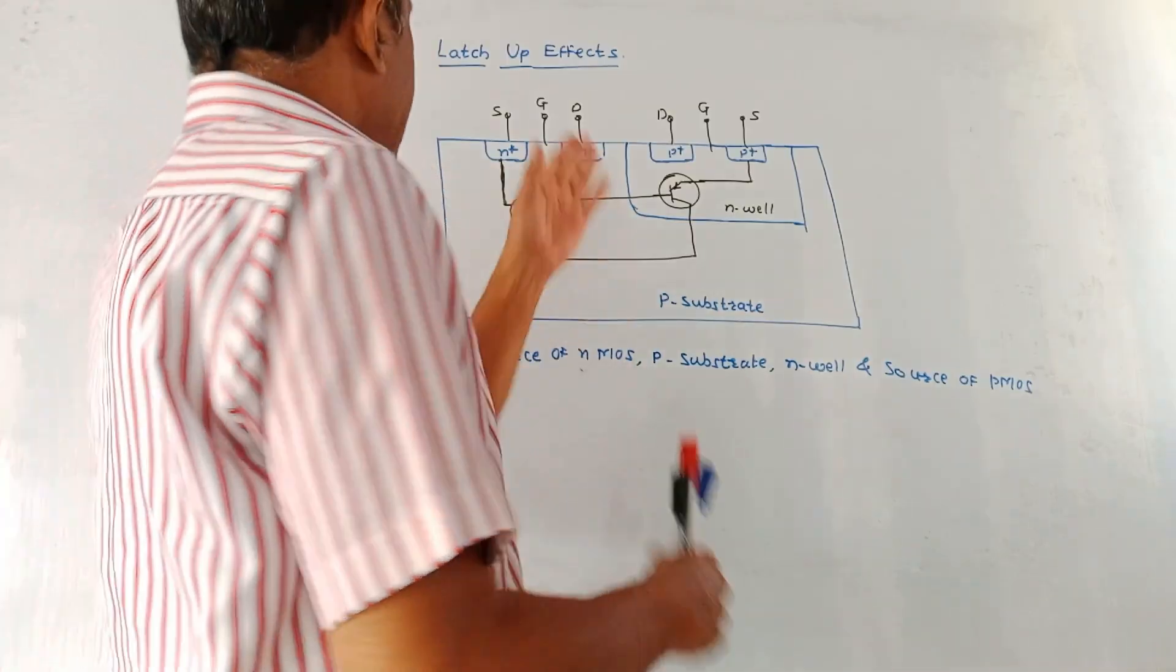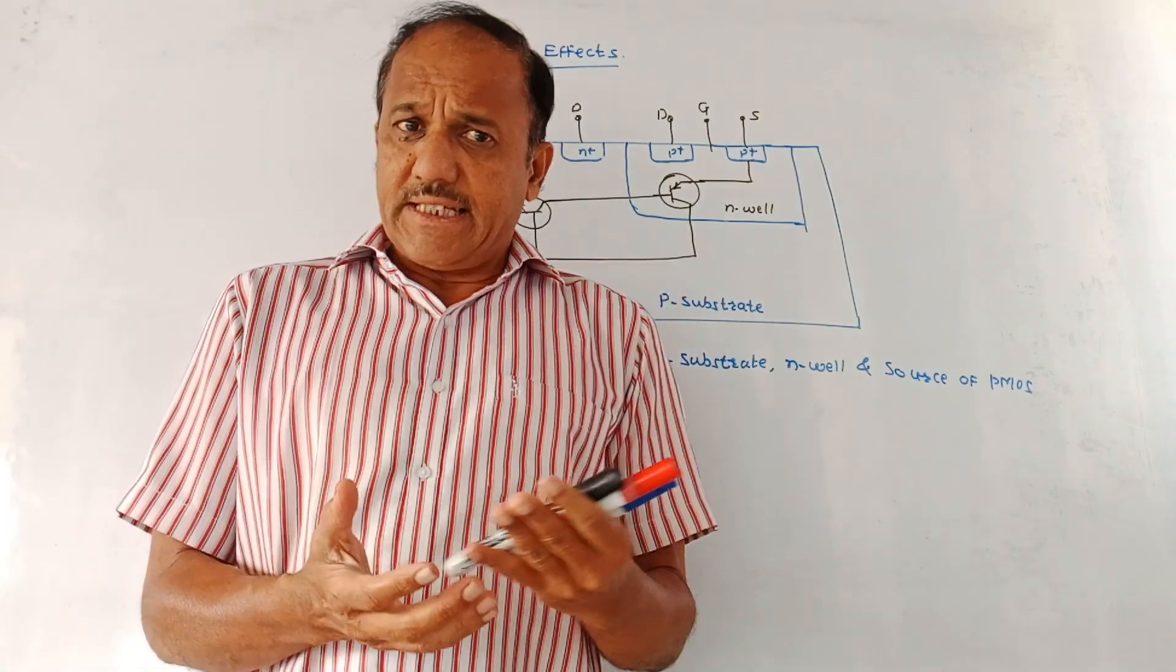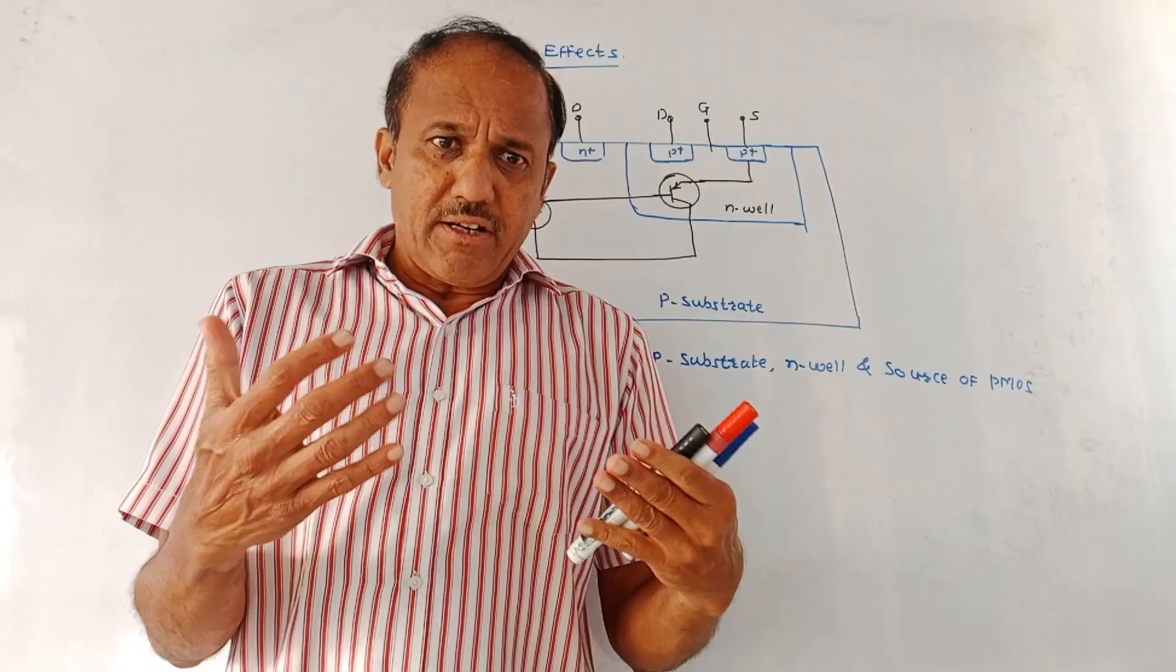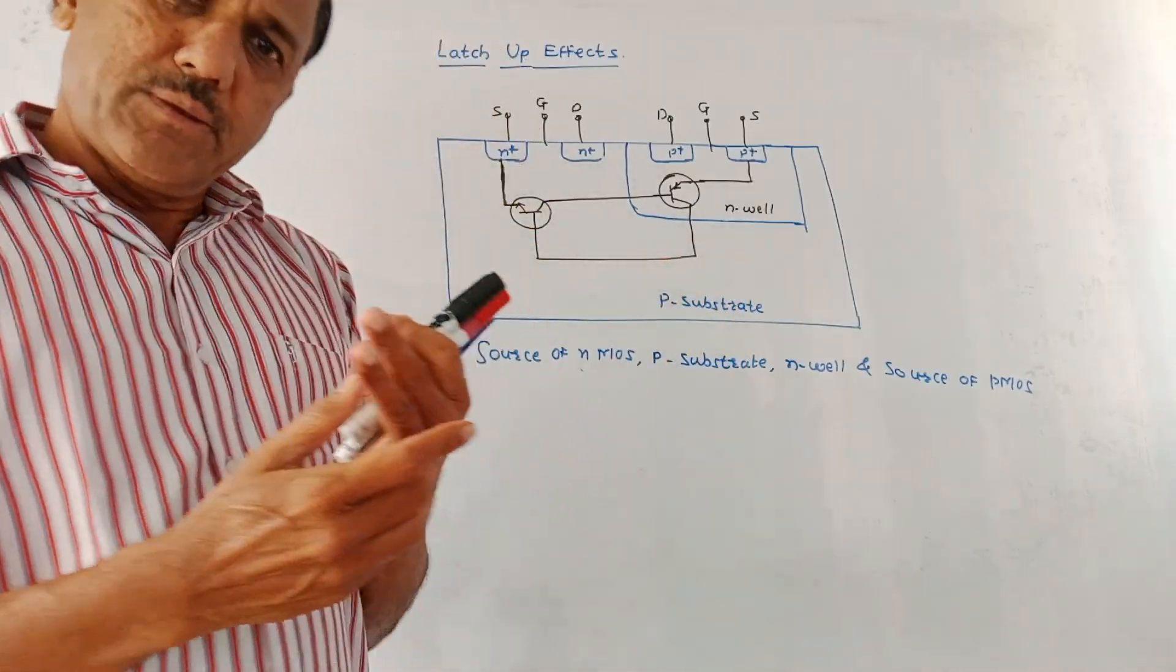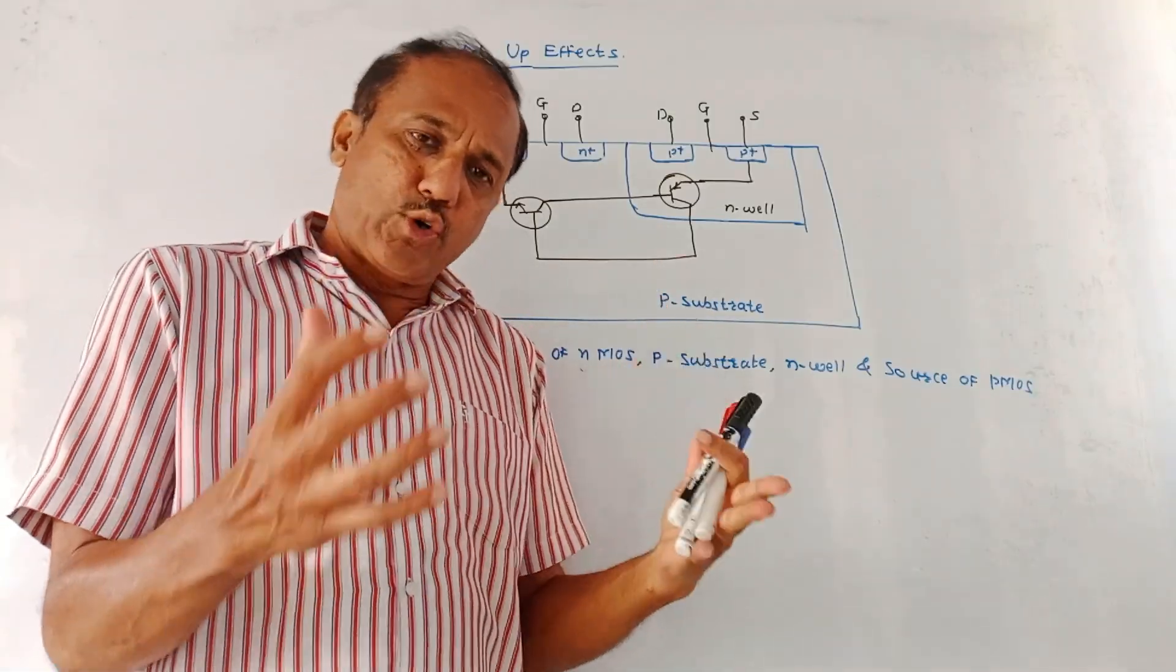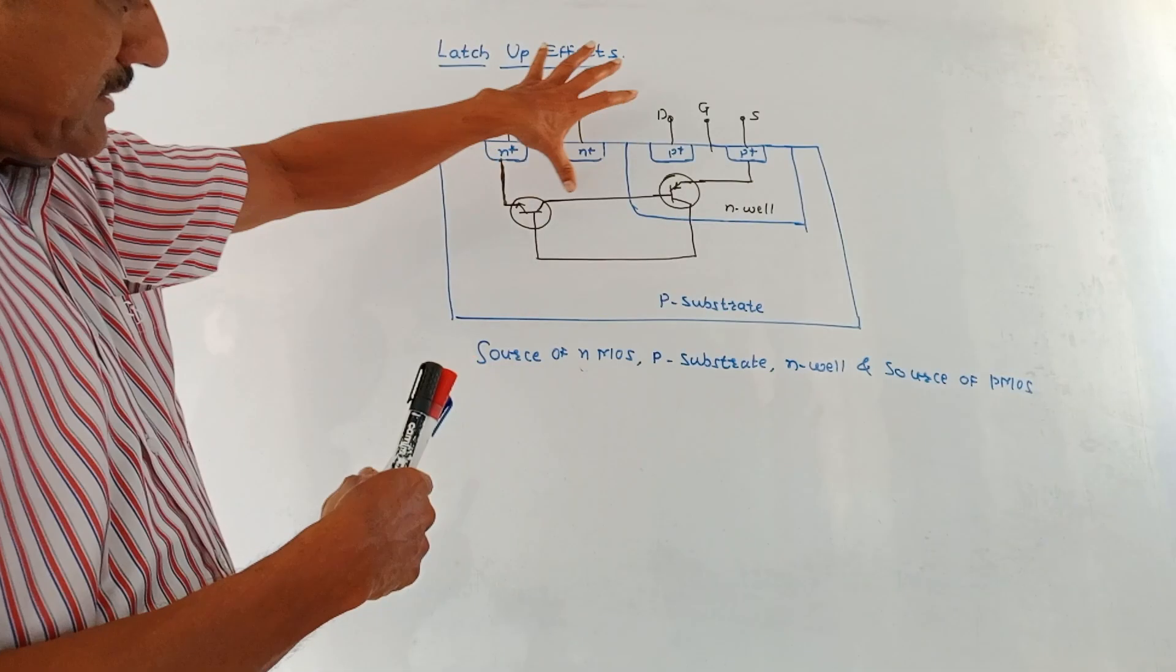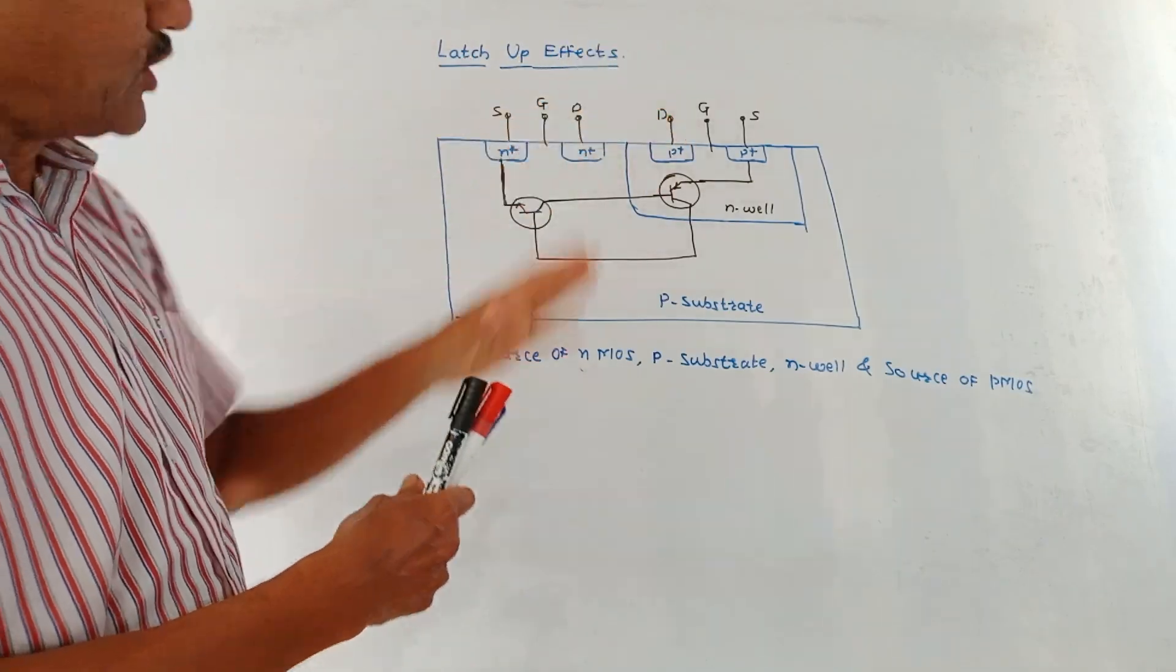Next part is latch-up effect. In case of MOS devices, there are many transistors that are existing. If you are talking about a CMOS device then it contains combination of both NMOS and PMOS. As shown in this diagram, I have shown both the NMOS as well as PMOS devices.